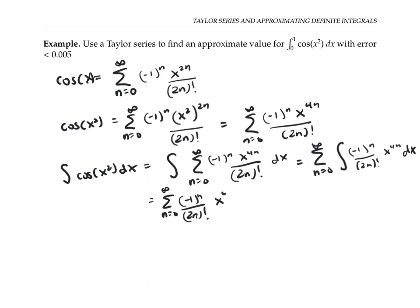which gives me x to the 4n plus 1 divided by that new exponent of 4n plus 1. For the indefinite integral, I'll add on a plus c, a constant for integration.